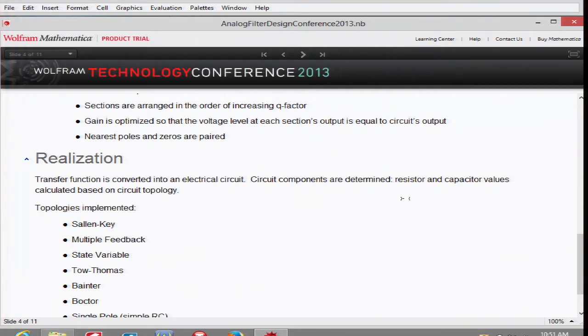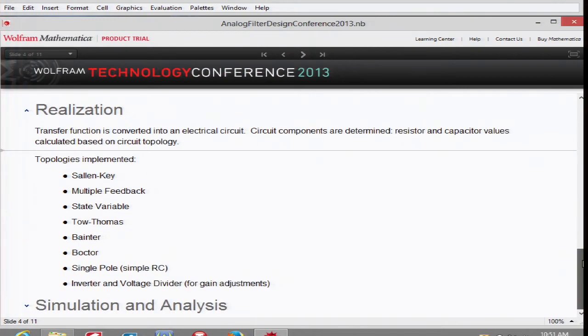This is all done to stay within the dynamic range so that the signal amplitude doesn't go out of the prescribed range for the amplifier. The next step is to transfer these second-order and first-order functions into an electrical circuit. We would determine the resistor and capacitor values based on circuit topology. Topologies I implemented include some of the most common single amplifier biquads such as Sallen-Key and multiple feedback, and also more complicated circuits such as state variable, Tow-Thomas, Bainter, Boctor. I also include first-order sections as well as inverter and voltage divider for gain adjustments.